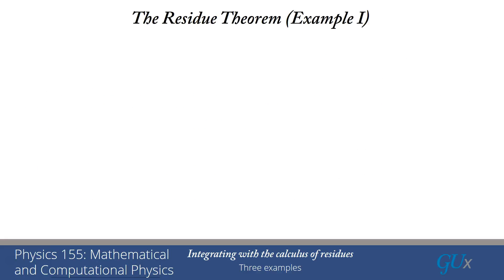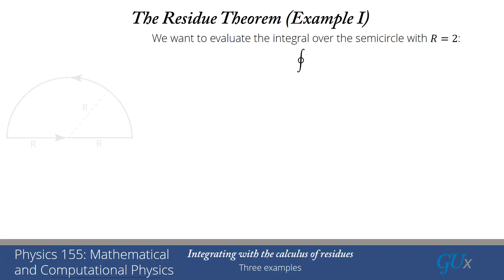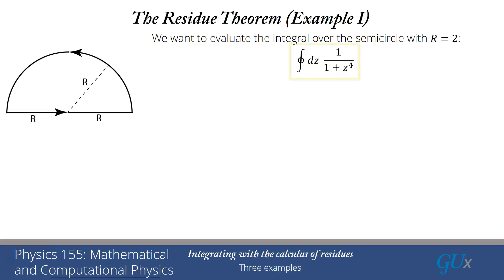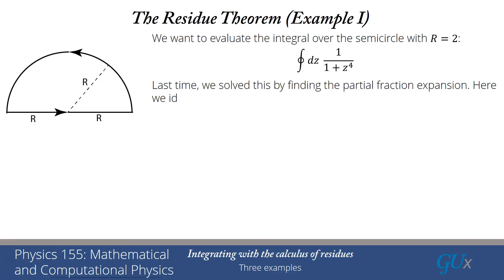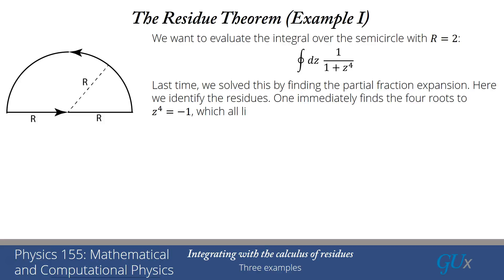We're going to start with an example we already know. It's the integral of 1 over (1 + z⁴) over a semicircle. We're going to pick r = 2 so that we enclose the poles of this function. Last time we did it by finding the partial fraction expansion; here instead we're going to identify the residues — find the poles and determine the residues at each one.